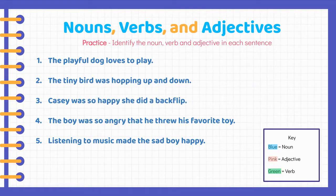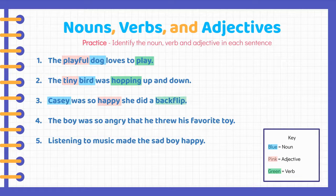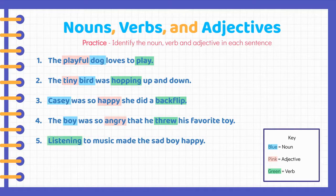We're back and we'll be going over the answers now. In our first example, playful was the adjective, dog was the noun, and play was the verb. In our second example, tiny was the adjective, bird was the noun, and hopping was the verb. In our third example, Cassie is the noun, happy is the adjective, and backflip is the verb. In our fourth example, boy was the noun, angry is the adjective, and threw was the verb. In our fifth example, listening is the verb, sad is the adjective, and boy is the noun.